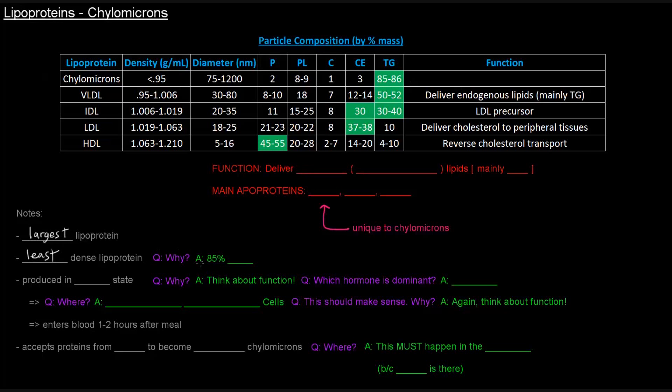Why are they the least dense? Well, because they're 85% triglycerides, and triglycerides aren't very dense entities.